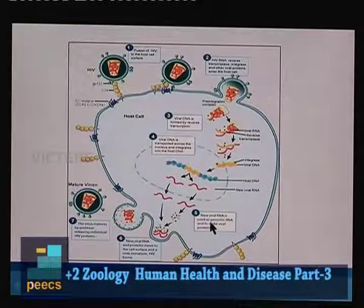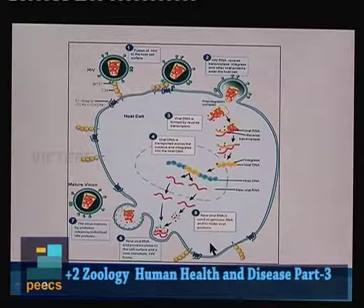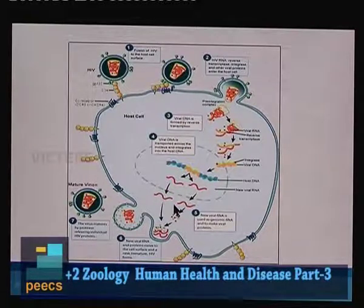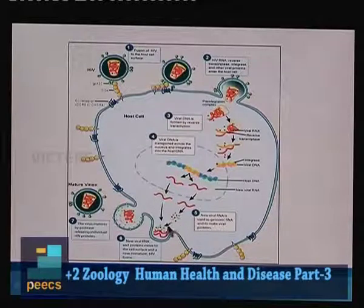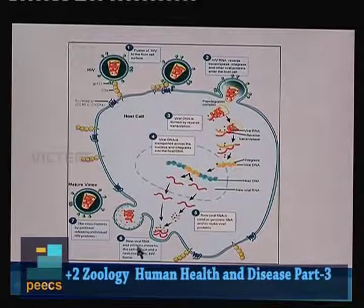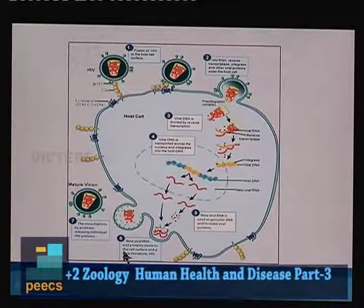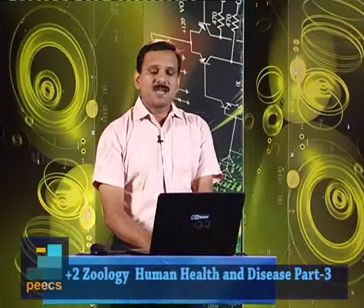After integration, new viral RNAs come out from the nucleus. This new viral RNA is used as the genomic RNA for newly formed viruses. Some proteins, including surface proteins for the virus, are also coded by this RNA. Finally, new viral RNA buds off from the host cell along with the protein coat, and the virus matures using the host cell machinery. HIV undergoes replication in this manner, including in T helper cells.